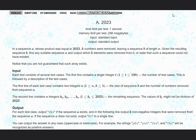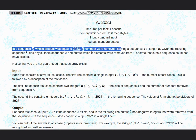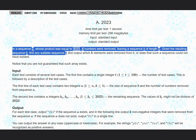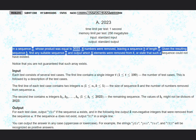Hello everyone, welcome to the channel. Here we are discussing the question from Goodbye 2023. The first question itself is 2023. The question states that in a sequence a whose product was equal to 2023, k numbers were removed leaving a sequence b of length n. Given the resulting sequence b, find any suitable sequence a and output which k elements were removed from it, or state that such a sequence could not have existed.